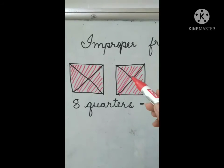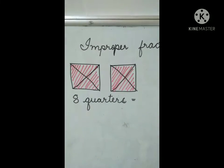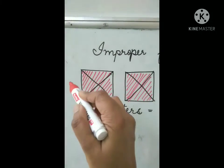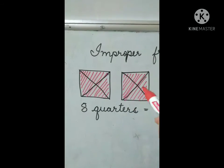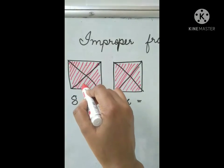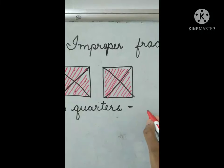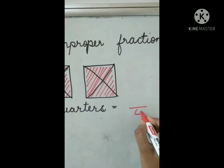Let's represent this figure in the form of improper fraction. Now, see, here each figure is divided into 4 equal parts. 1, 2, 3, 4. So that 4 will be written in the denominator.